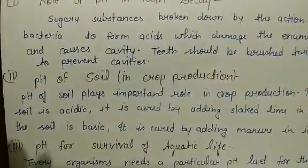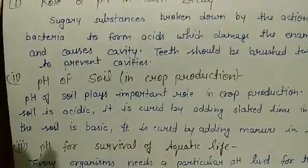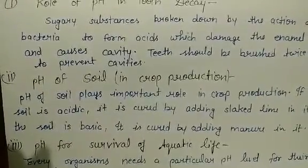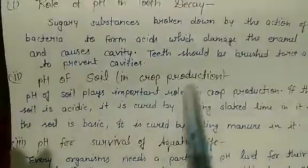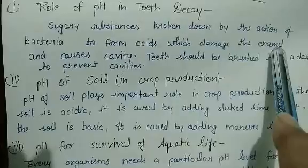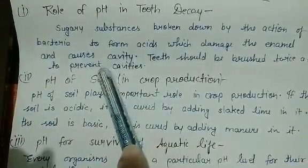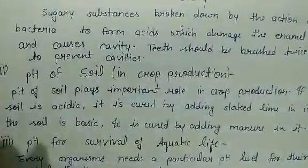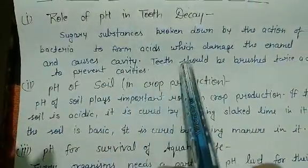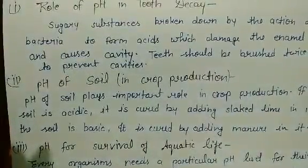Enamel is a very hard substance, but when acid forms between our teeth due to the action of bacteria and sugary substances, it accumulates because of plaque and corrodes the enamel layer. When the corrosion of the enamel layer happens, it causes cavities — depressions or slight holes formed in the teeth.